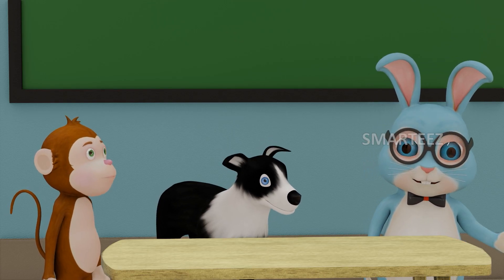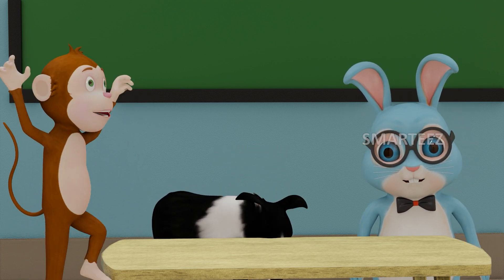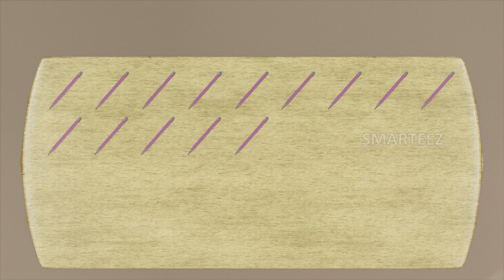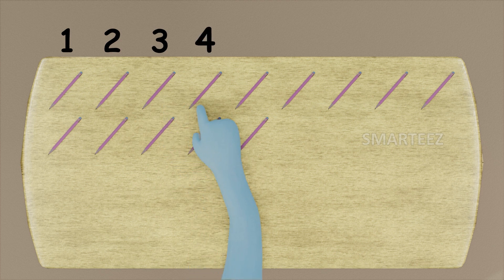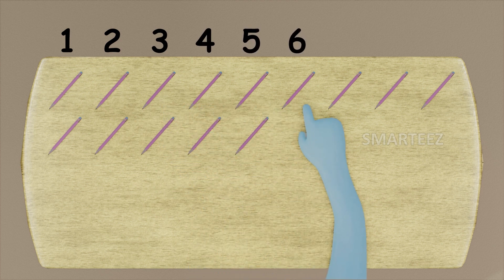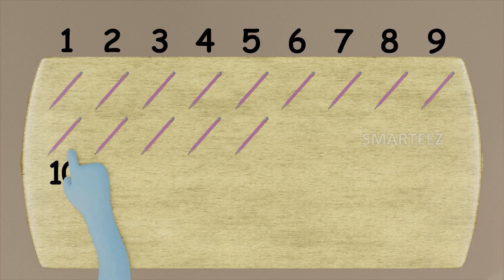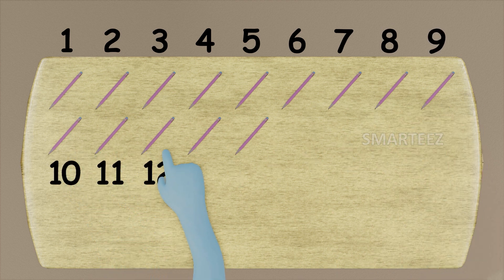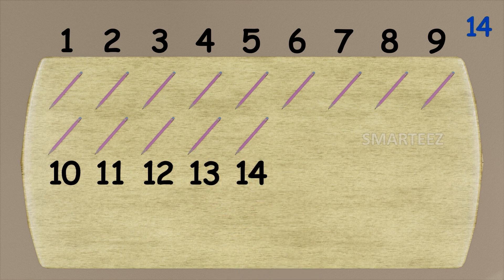This time I'm going to split pencils between Byra and Rangu. Let's see how many pencils we have here on the table. That's one, two, three, four, five, six, seven, eight, nine, ten, eleven, twelve, thirteen, and fourteen. We have a total of fourteen pencils.